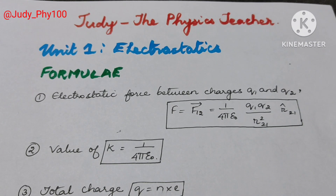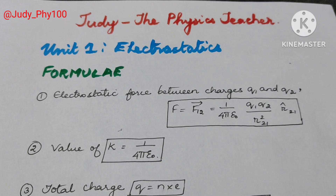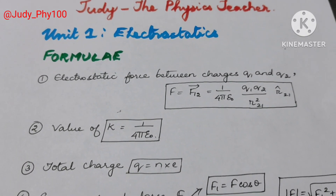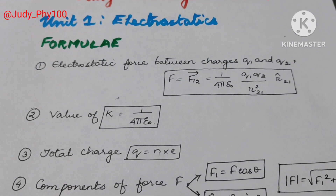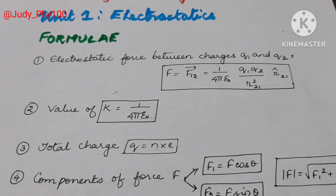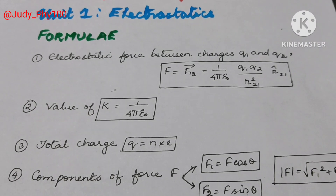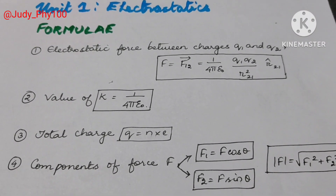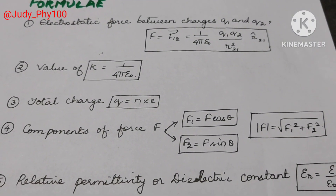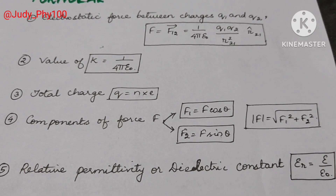Total charge in the system: Q is equal to n into e, where n is an integer and e is the electron charge. Components of force F1: along the x-axis F1 is equal to F cos theta, along the y-axis F2 is equal to F sin theta. Total force magnitude is equal to square root of F1 squared plus F2 squared.